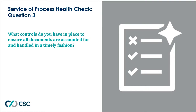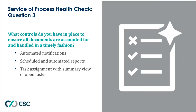Question three is about whether you have the proper controls in place to ensure all documents are received and handled. This starts with how you find out about service of process — ideally through automated notifications close to the time of receipt, giving you the earliest possible warning. Those notifications should include baseline information about the documents so you can assess priority. And ideally, within the notification, you can go directly to the underlying document to take action as quickly as needed.